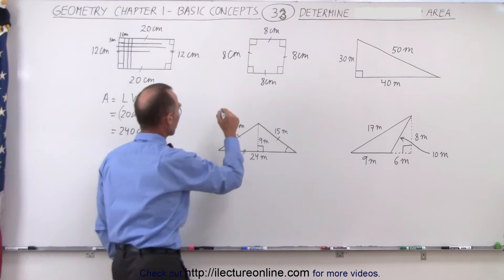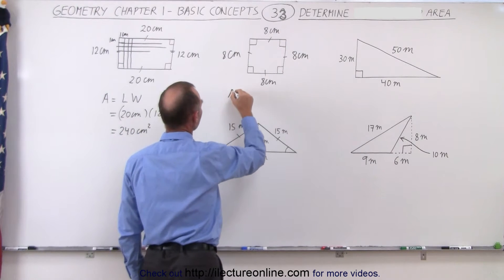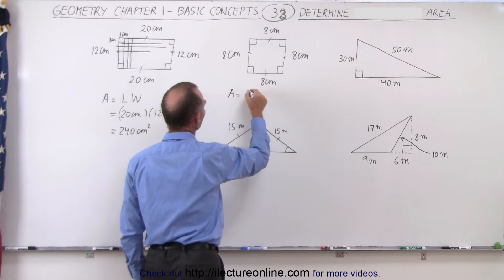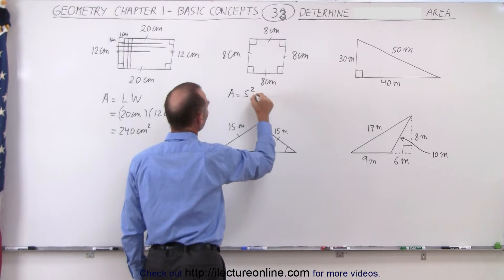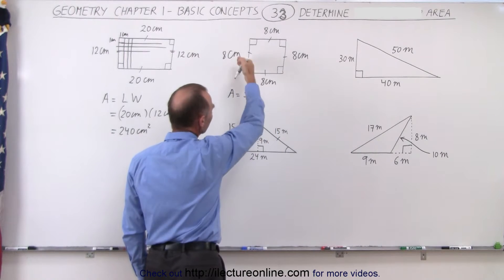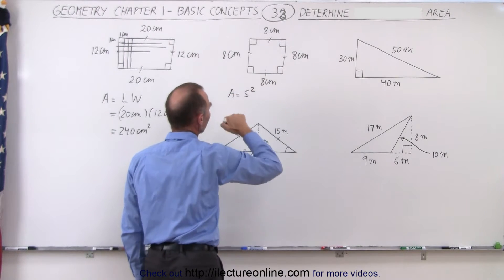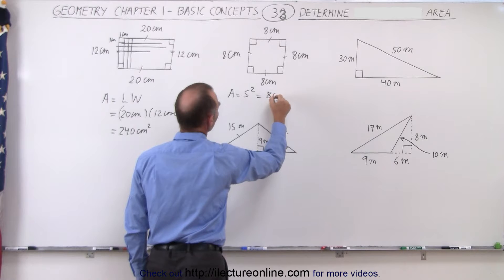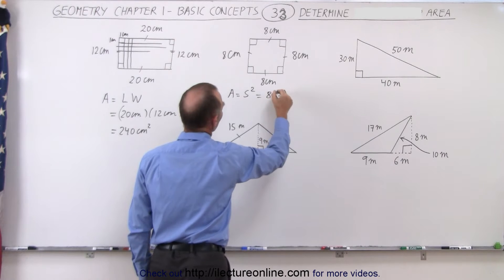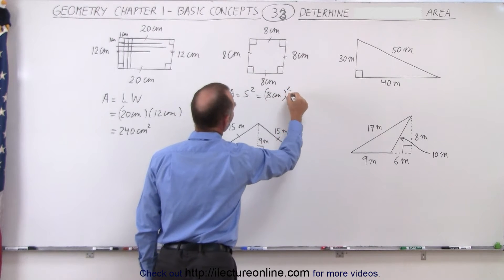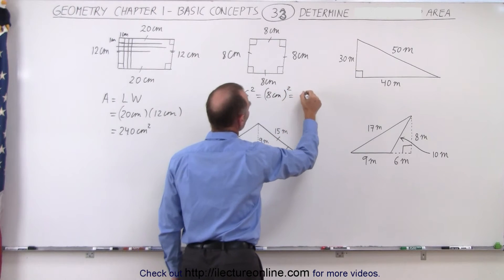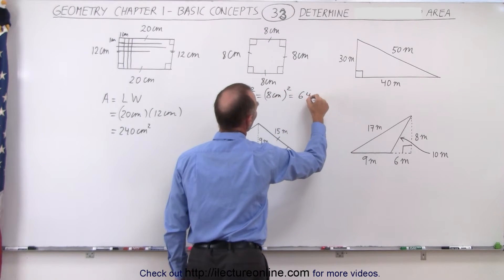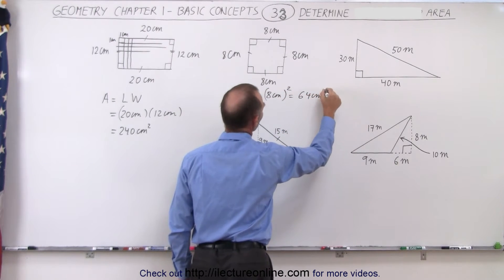Here, the area of the square — area is equal to the side squared — because each side has the same length, and so this would be 8 centimeters. We want to square that, so this is equal to 64 centimeters squared.